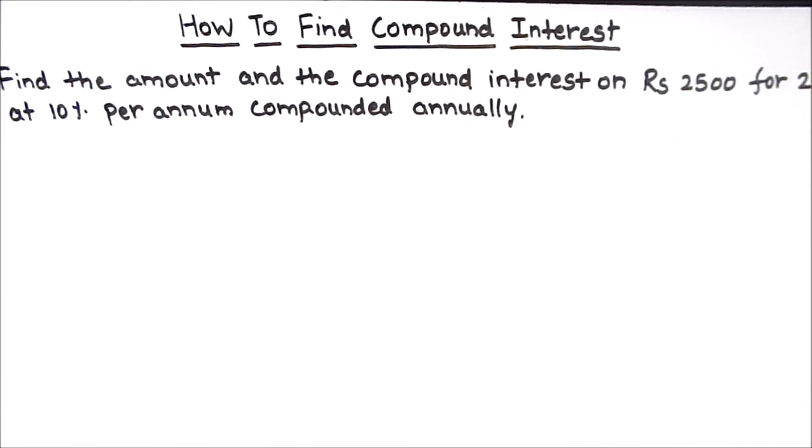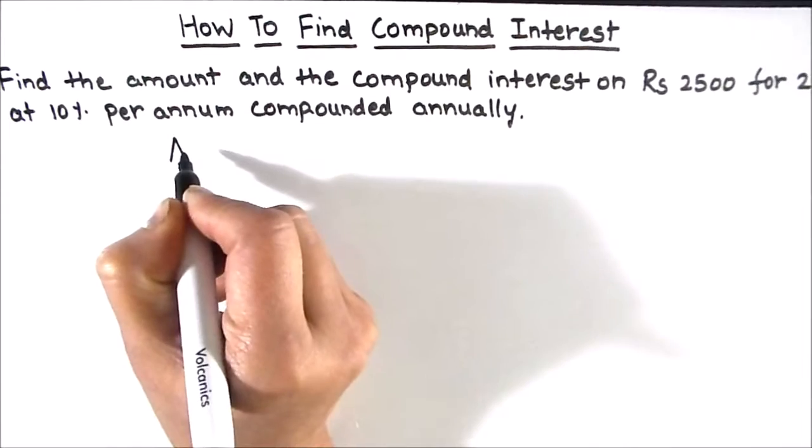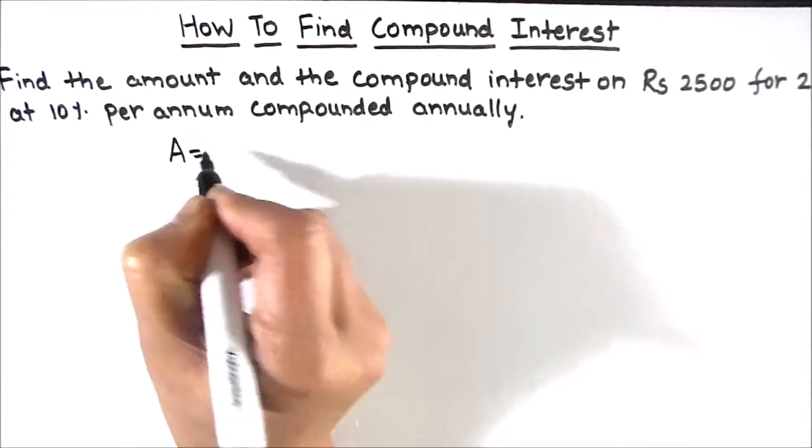In this question we need to find out the amount and the compound interest both. So first we'll use the amount formula to find the amount and then we'll find the compound interest.